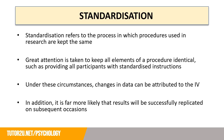Another way to minimise the effects of extraneous or confounding variables is standardisation. Standardisation refers to the process in which procedures used in research are kept the same. Great attention is taken to keep all elements of a procedure identical, such as providing all participants with standardised instructions. Under these circumstances, changes in data can be attributed to the IV, because we can hope that nothing else was getting in the way — all participants were given the same instructions, the same amount of time, and took part in the same room with the same lighting.